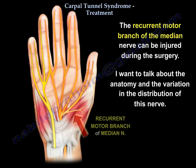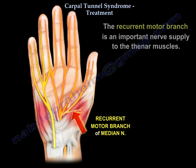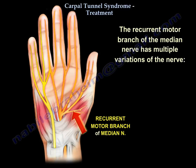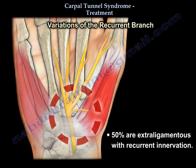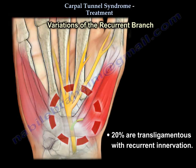The recurrent motor branch of the median nerve can be injured during surgery. After passing through the carpal tunnel, the median nerve gives a branch on the radial side called the recurrent motor branch — this branch is an important nerve supply to the thenar muscles. The recurrent motor branch has multiple variations: 50% are extra-ligamentous, 30% are sub-ligamentous, and 20% are trans-ligamentous. This trans-ligamentous nerve can be injured.